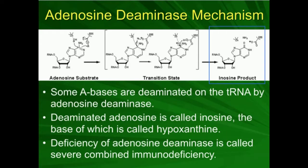In the tRNA molecule, some of the adenines are deaminated — not all of them, but select ones typically are. That's catalyzed by an enzyme called adenosine deaminase, which we've seen in purine metabolism, specifically in the degradation pathway. Adenosine deaminase can react with free adenosine or adenosine as part of an RNA molecule.